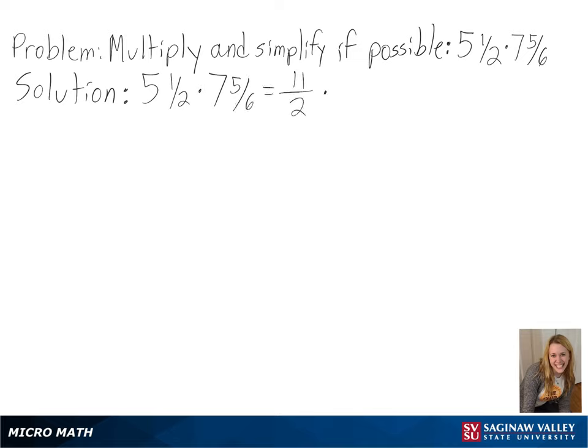Converting these, we get 11 over 2 times 47 over 6, and multiplying these out we get 517 over 12.